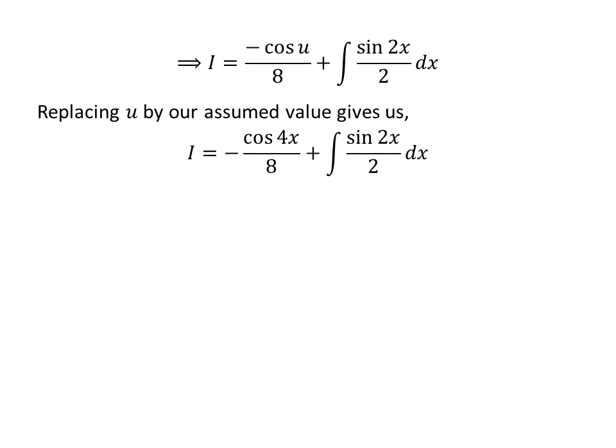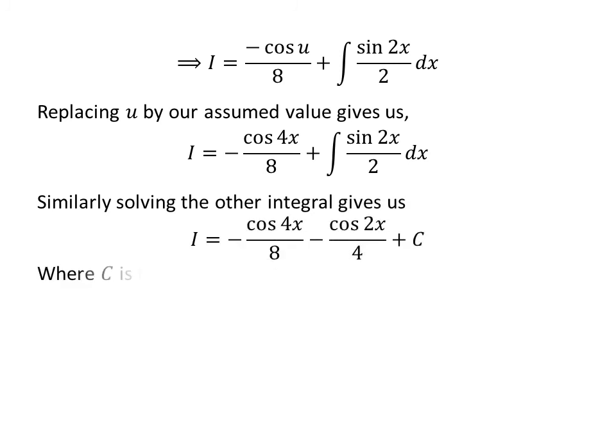Let us substitute u by its value assumed earlier, so i is equal to minus cosine of 4 times x upon 8, plus the integral of sine of 2 times x upon 2 with respect to x. Similarly, we can solve the integral of sine of 2 times x upon 2 with respect to x as we solved the previous integral. So we get i is equal to minus cosine of 4 times x upon 8, minus cosine of 2 times x upon 4, plus capital C. Capital C is the arbitrary constant of the indefinite integral. Never forget to add this constant at the end.